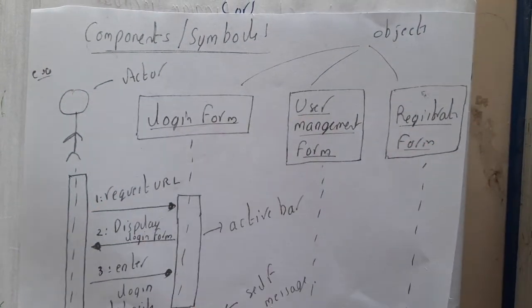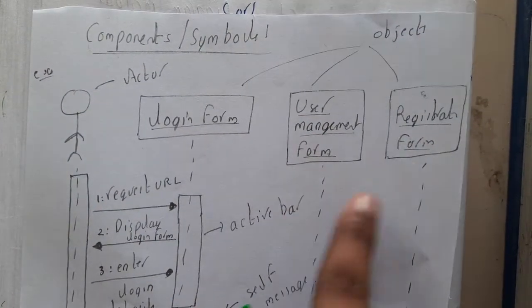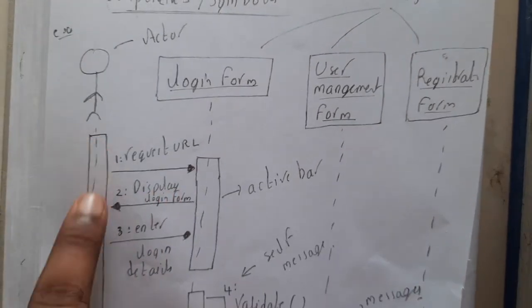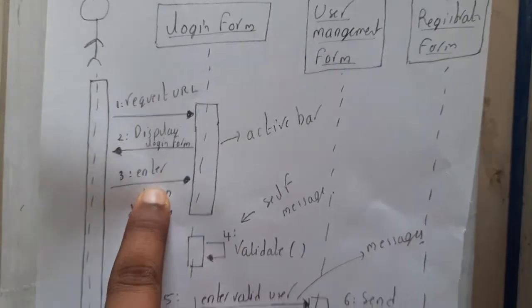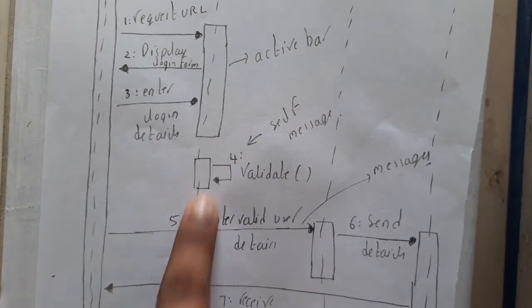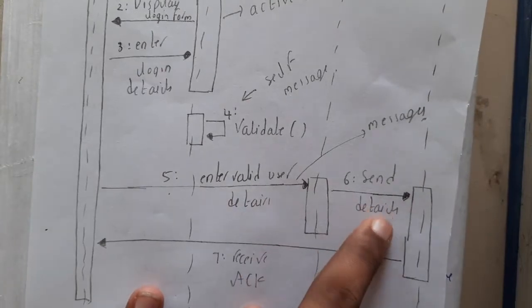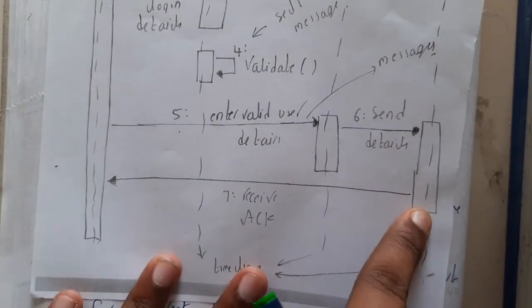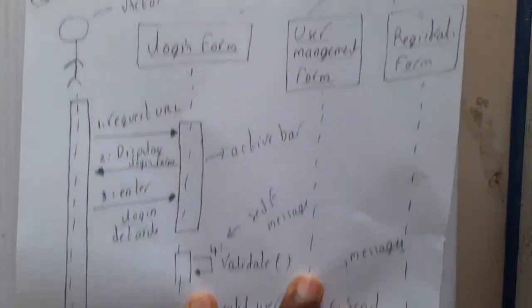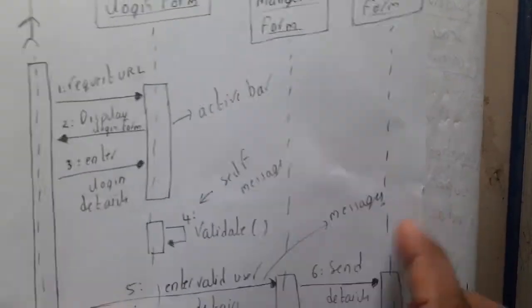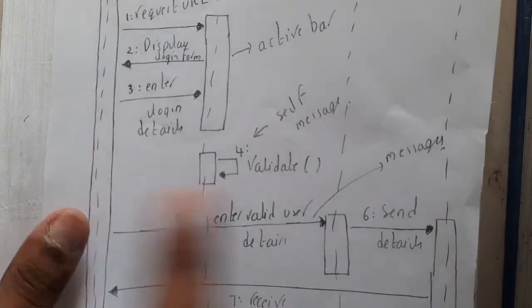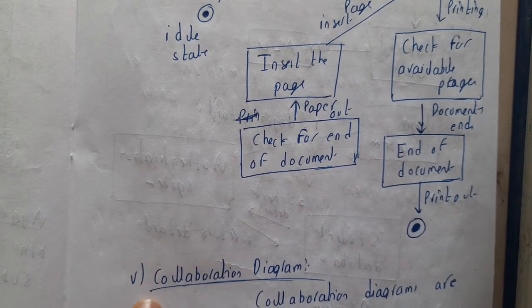It shows the sequence of steps during implementation of a procedure. For example, an actor tries to log in. Initially he sends a request, the login page is displayed, he enters login details, validation occurs, if correct he is sent to the details, registers, and gets an acknowledgement. The path from request to acknowledgement is the sequence diagram.